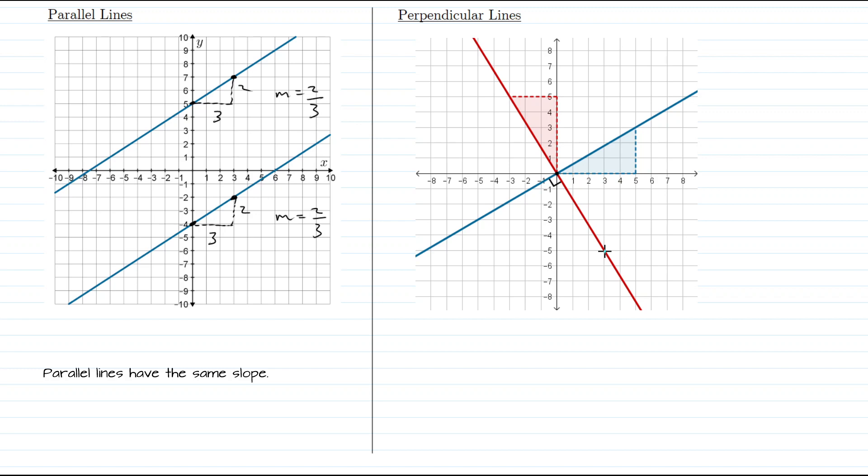So what really happened here? For our original line, the slope changed sign. It went from positive to negative, and furthermore, the run became the rise and the rise became the run. So the slope of this red line would actually be what we call the negative reciprocal of the slope for the blue line. We need to change the sign and we need to flip the rise and the run. That is, we flip the fraction for slope.